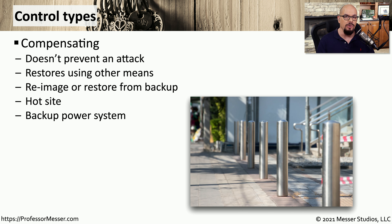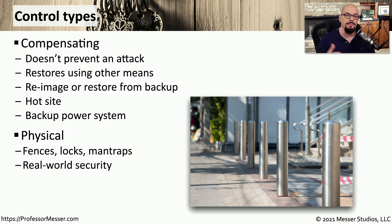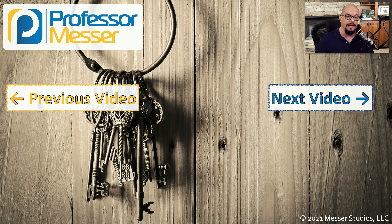A compensating control attempts to recover from an intrusion by compensating for the issues left behind. For example, if someone stole a laptop with our data, we could compensate by purchasing a new laptop and restoring the data from backup. Or if someone cut the power to our data center, backup power systems or generators would compensate for that loss. A physical control type exists in the real world to prevent security events — something like a fence or a door lock that prevents someone from physically gaining access to our facility.